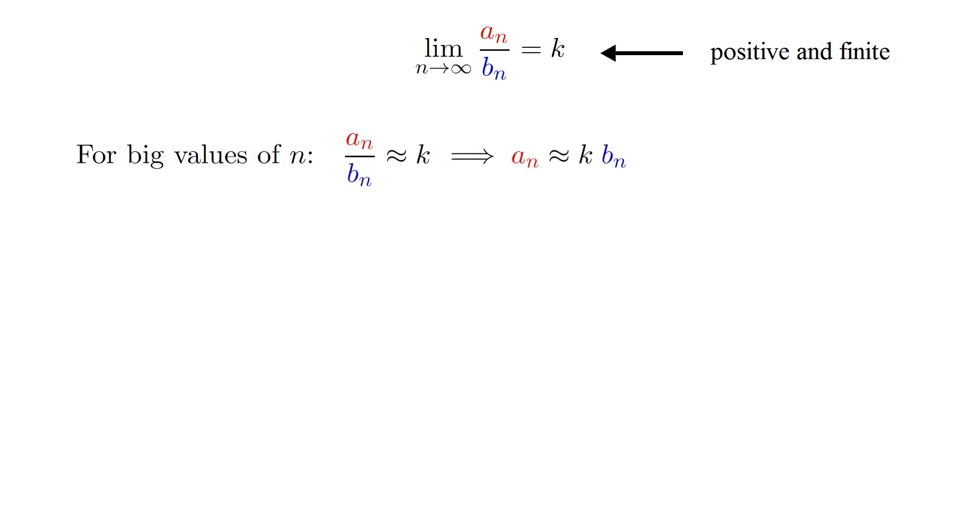Rearranging this slightly, it also means a sub n is approximately equal to k times b sub n, which in turn means the sigma sum of a sub n approximately equals the sigma sum of k times b sub n, or at least it does if we restrict ourselves to big values of n, whatever that means.